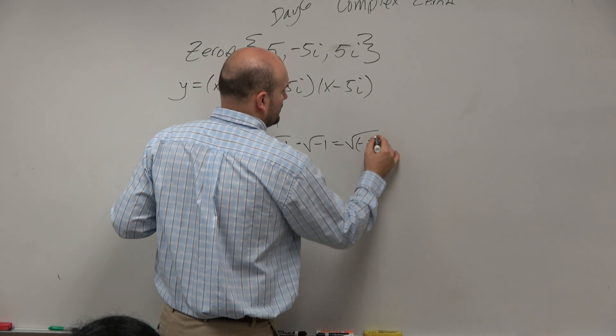So let's multiply this out. x times x is x squared. 5i times negative 5i is going to be negative 25 i squared. Ooh, but wait a minute. i squared is equal to negative 1. So negative 1 times negative 25 is positive 25.